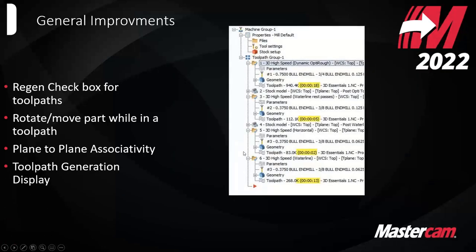There's a quick update to the operations manager. We've updated a lot of the graphics in the operations manager. You can also right-click in the white area of the operations, go to display options, and display the regeneration time it took for a given tool path. Note that on stock models and some five-axis and 3D tool paths, since processing is offloaded to the graphics card, it might not track 100%, but it'll give you a good idea of how long a particular tool path took to generate.